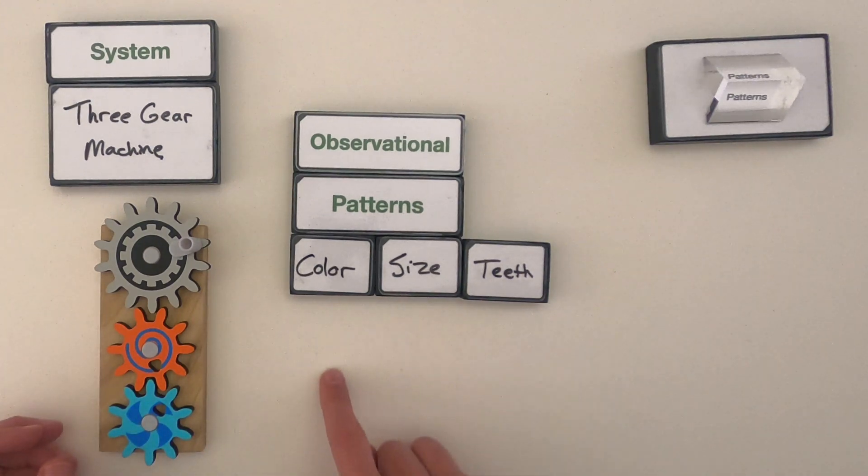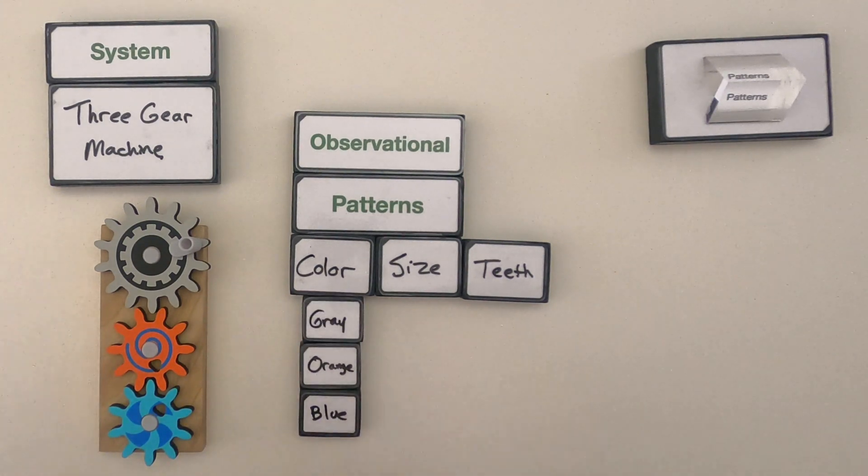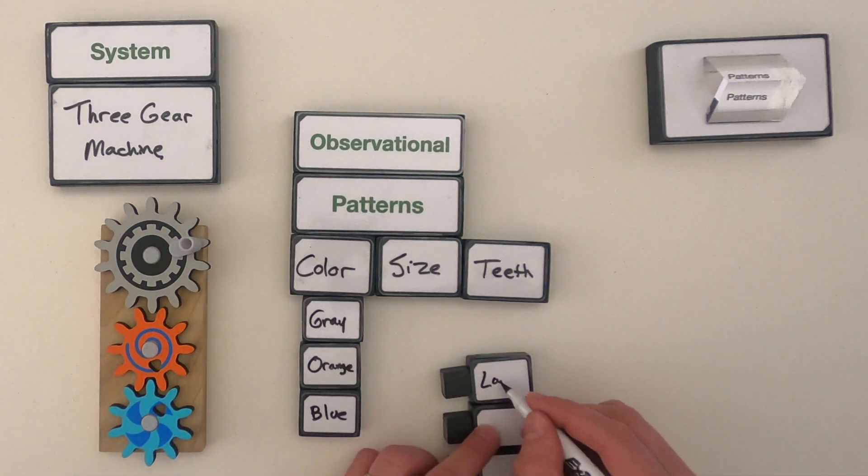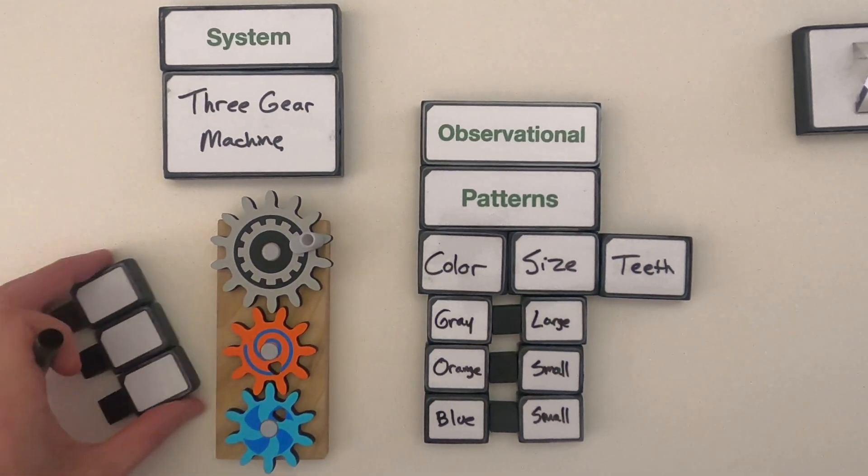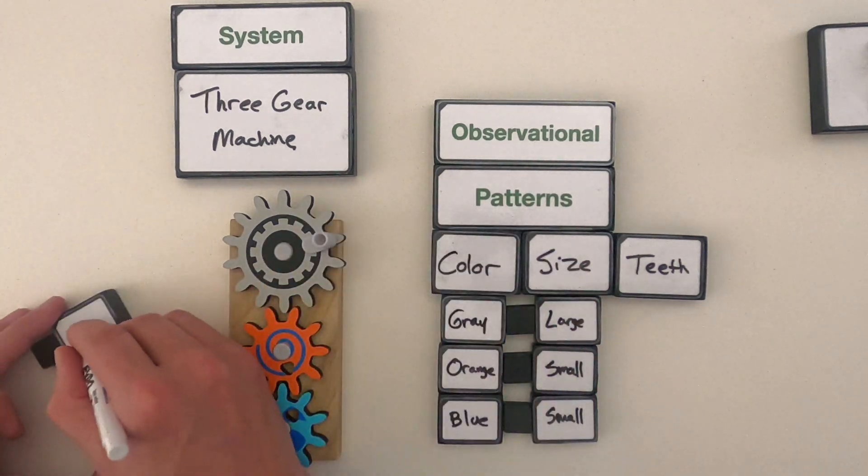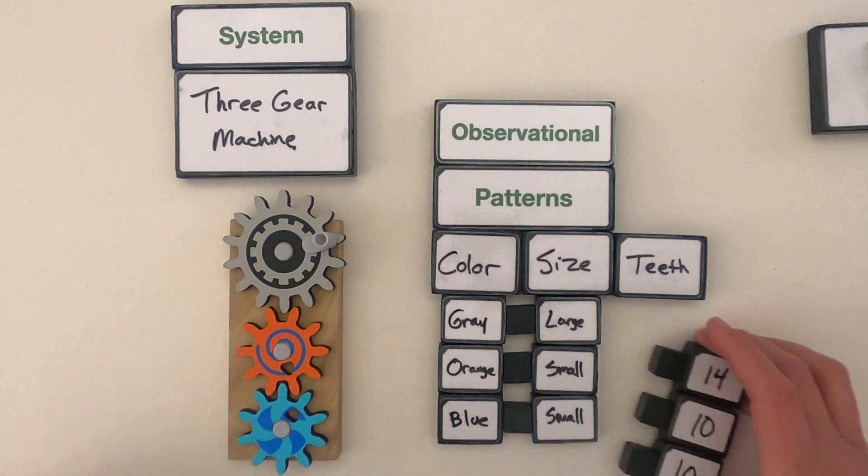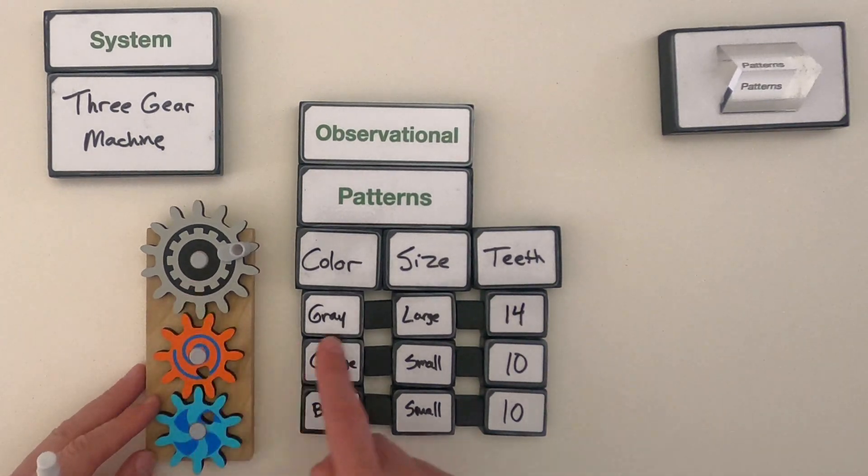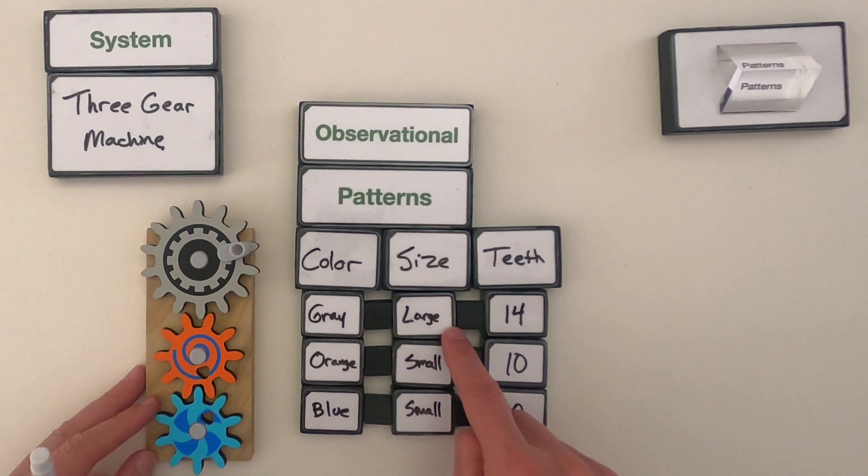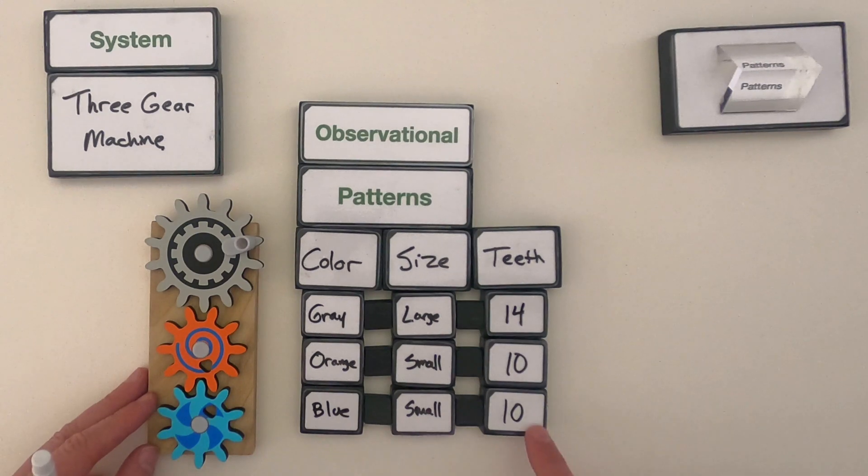So now let me write those patterns below those descriptors. What I'm showing here is for the gray gear, it's large in size and it has 14 teeth versus the blue, which is smaller in size and only has 10 teeth.